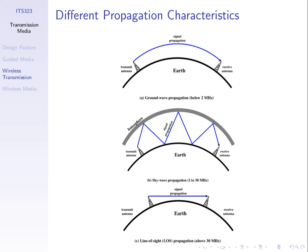Most of the systems we deal with today use line-of-sight propagation — greater than 30 MHz. There are some special cases that use the others. Shortwave radio, for example, follows the contour of the earth and can be received by your radio from Europe or the US — that's one case you may have come across.